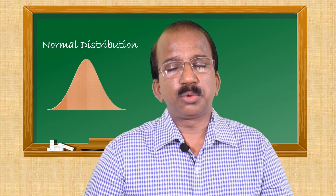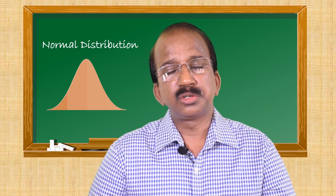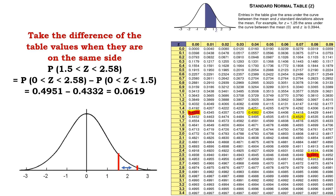If you have two z-scores on the same side, you have to take the difference of the table values. For example, with z-scores 1.5 and 2.58: the table value for 2.58 is 0.4951, and the table value for 1.5 is 0.4332. The difference is 0.0619, as shown in the figure.